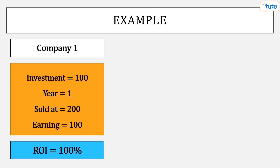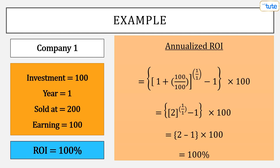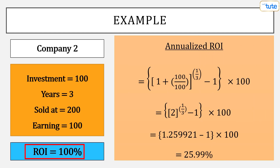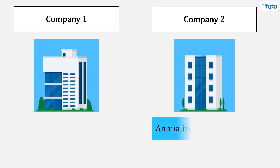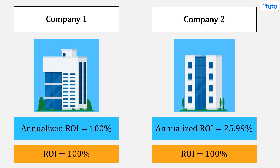Let's calculate annualized ROI for the example we discussed at the start. For the first company, annualized ROI comes to 100%, which is the same as ROI, as the period of holding the investment is only 1 year. So return on investment is the annual return on investment. Now for the second company, ROI is 100%, but annualized ROI comes to 25.99%, as the period of holding the investment is 3 years. And thus, we earn less annually in the second company compared to the first company, though both gave the same returns of 100%.